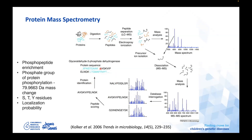For phosphopeptide analysis, you first have to enrich for phosphorylated peptides. In the phosphorylated peptide, there is a mass increase of about 80 Daltons for every phosphorylation present, and this phosphorylation could occur on serine, threonine, or tyrosine residues. Based on the mass increase from the peaks, you can tell where the phosphorylation site is.